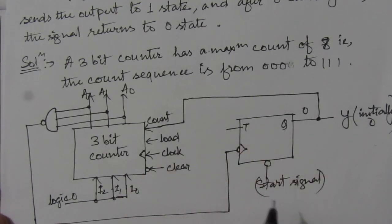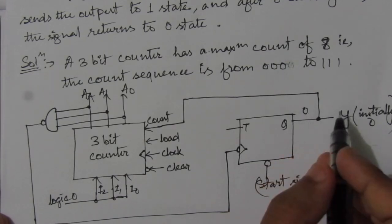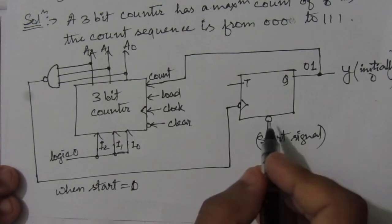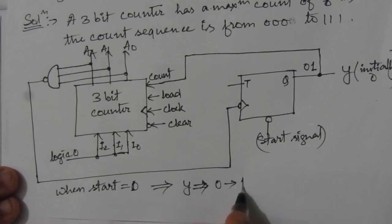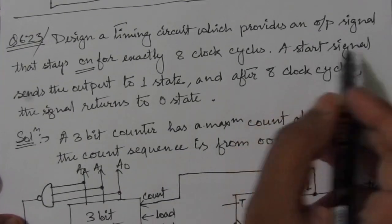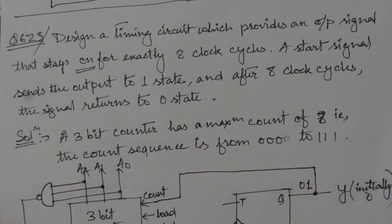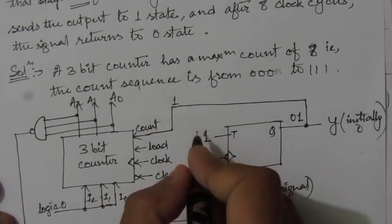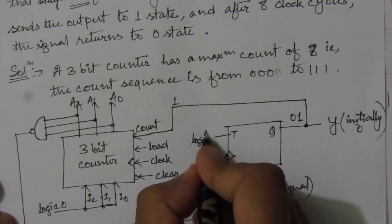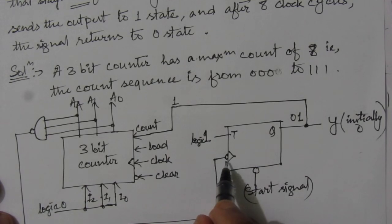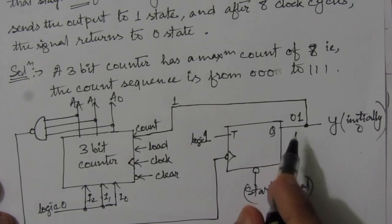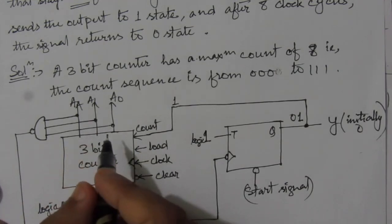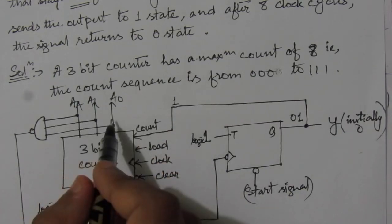Let us understand the operation of the circuit. When we have the start signal, the output was initially 0 and will go from 0 to 1. Since the question states that the start signal sets the output to 1, when we have 1 at the output, this 1 is fed back to the count input. With logic 1 at the T input and whenever there is a 1-to-0 transition at the clock, this flip-flop output will change. So the counter will start counting, and with each clock pulse, the counter output will be incremented by 1.